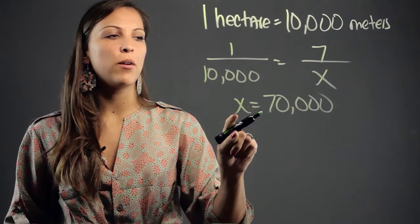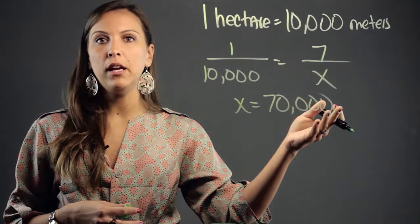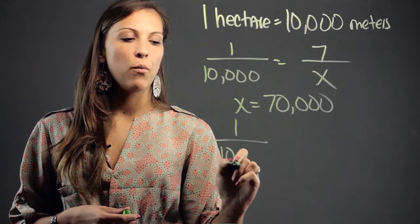So 7 hectares would be equivalent to 70,000 meters. You can do the same thing backwards if you know the number of meters and want to know the number of hectares. We use this same ratio, 1 to